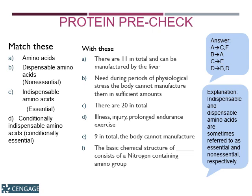There are nine total that are estimated to be indispensable or essential. The dispensable amino acids include 11 amino acids that can be manufactured in the liver. There are conditionally essential amino acids, also known as conditionally indispensable amino acids. In periods of physiological stress, the body cannot manufacture certain amino acids in sufficient amounts. So during extreme stress or even pregnancy, some amino acids are needed in greater quantity or become essential or indispensable.